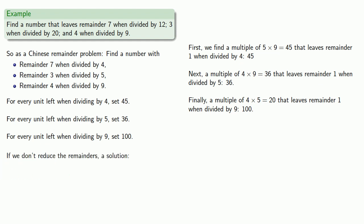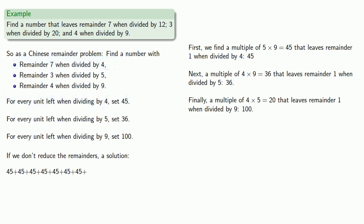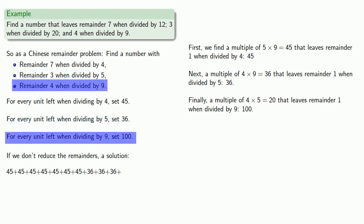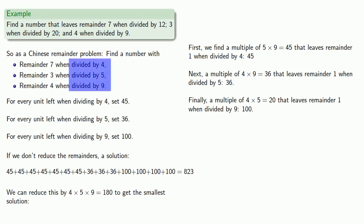Since we have remainder 7 when dividing by 4, we set down 7 forty-fives. Then 3 thirty-sixes, and 4 hundreds. Adding them up gives our solution: 823. We then reduce by 4 times 5 times 9, which is 180. Subtracting 180 repeatedly gives our smallest solution: 103.